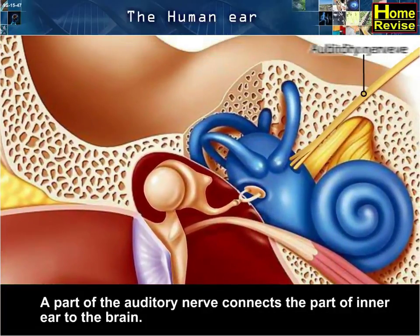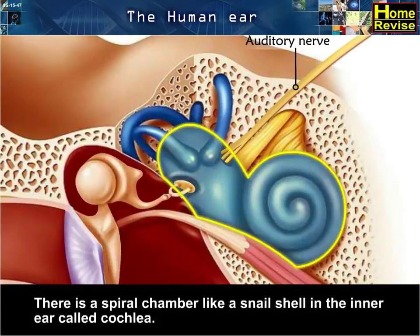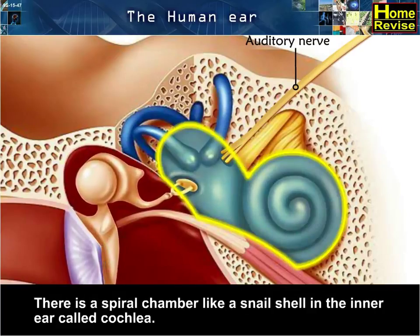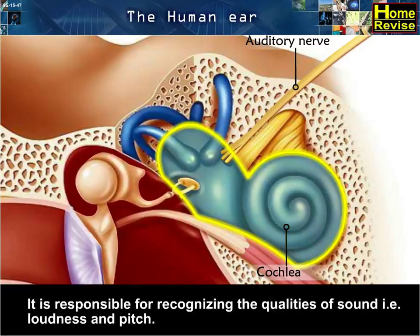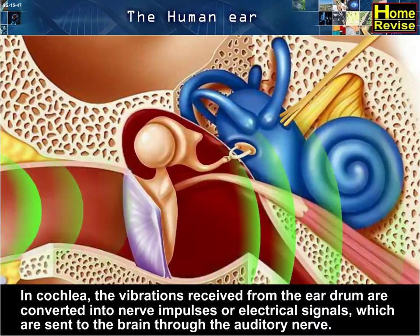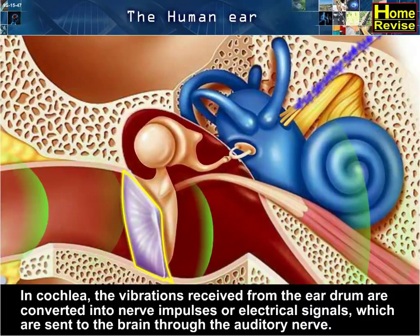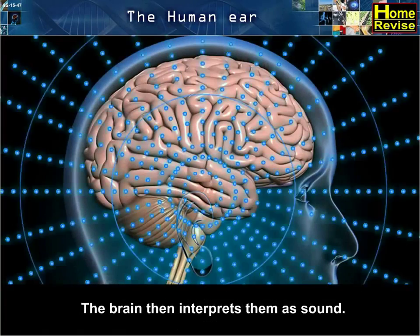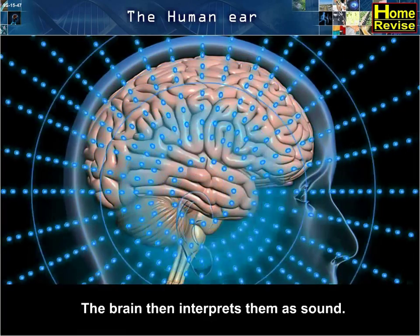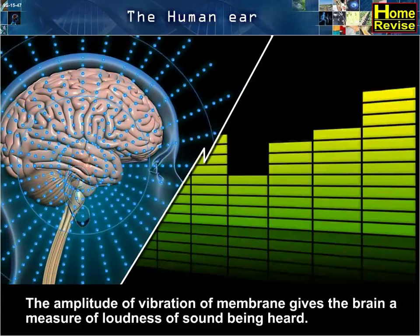A part of the auditory nerve connects the inner ear to the brain. There is a spiral chamber like a snail shell in the inner ear called the cochlea. It is responsible for recognizing the qualities of sound, i.e. loudness and pitch. In the cochlea, the vibrations received from the eardrum are converted into nerve impulses or electrical signals which are sent to the brain through the auditory nerve. The brain then interprets them as sound. The amplitude of vibration of the membrane gives the brain a measure of the loudness of the sound being heard.